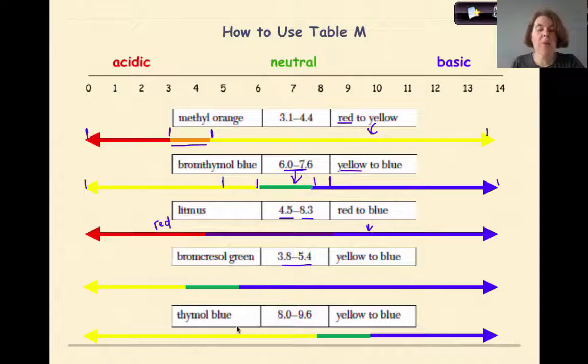And then finally, thymol blue, very similar, but a different spot of transition. From 0 to 8, it will be yellow. From 9.6 to 14, it'll be blue. And the middle there is going to be green as it transitions from one color to the other. And these are very good to use if you have an unknown solution. You can use multiple indicators and help you pinpoint what the pH of that unknown solution is.